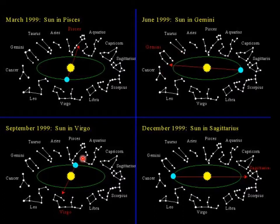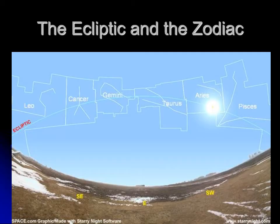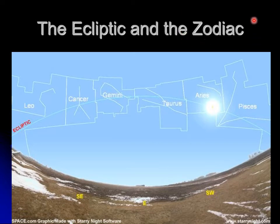You could map the apparent path of the sun across the sky. It's really Earth that's doing the moving, but you could map this apparent path, and we call that the ecliptic. The ecliptic is the apparent path the sun takes across the sky. Over the course of the year, it goes through about 12 or 13 constellations, and we call those constellations the zodiac.